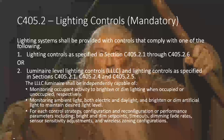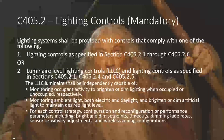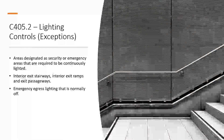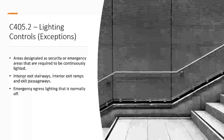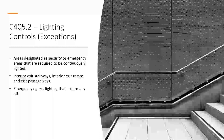Mandatory lighting controls: lighting systems shall be provided with controls that comply with one of the following — either go through sections 405.2.1 to 405.2.6, or use luminaire level lighting controls. I'll keep coming back to LLC to show how they simplify code compliance. Exceptions include areas designated as security or emergency areas that are required to be continuously lighted — code does not define 'security or emergency area,' so that's up to you based on building type and context. Also excepted are interior exit ways, exit ramps, exit passageways, and emergency egress lighting that is normally off — meaning they are controlled independently of general lighting.